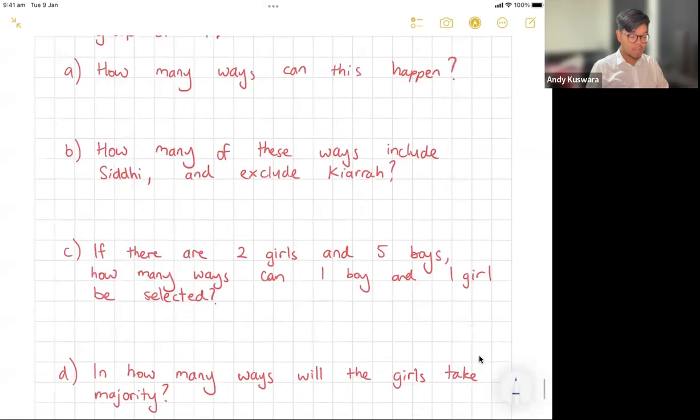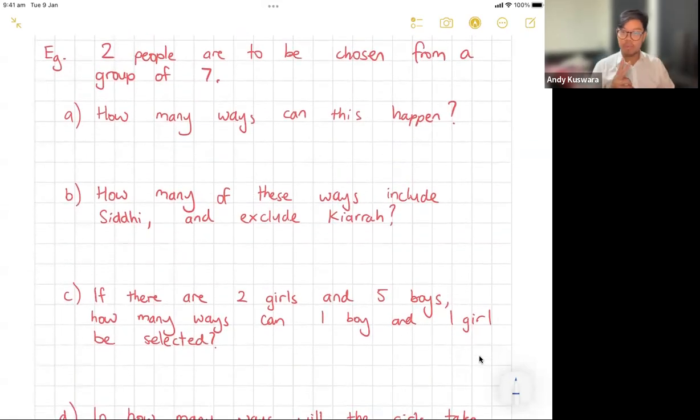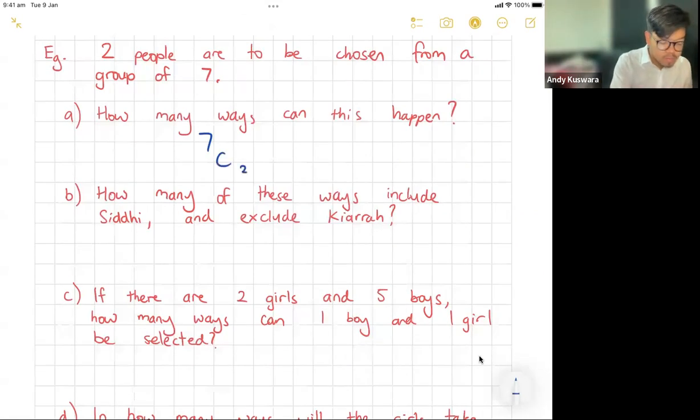Now let's actually tackle a question here that uses it. It says that two people are to be chosen from a group of seven. How many ways can this happen? Well, I've got seven people in a group, there's seven total people, and I'm choosing two out of those seven. So 7C2—you go 7, shift, then the division button will give you the C, then 2. This should give you an answer of 21. So there's 21 ways that we can pick two people from a group of seven.